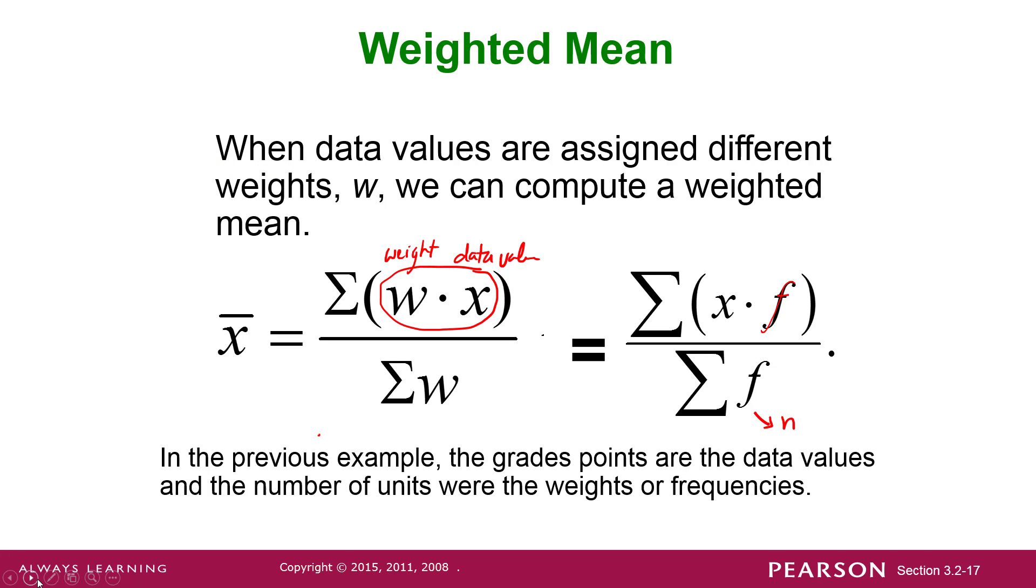So what we saw is that we had to add up the products of the data times the frequencies. That's the numerator. And then we had to add up the frequencies and divide those two values. Remember, the sum of the frequencies is n. So you can write sum of frequencies or you can just write n.